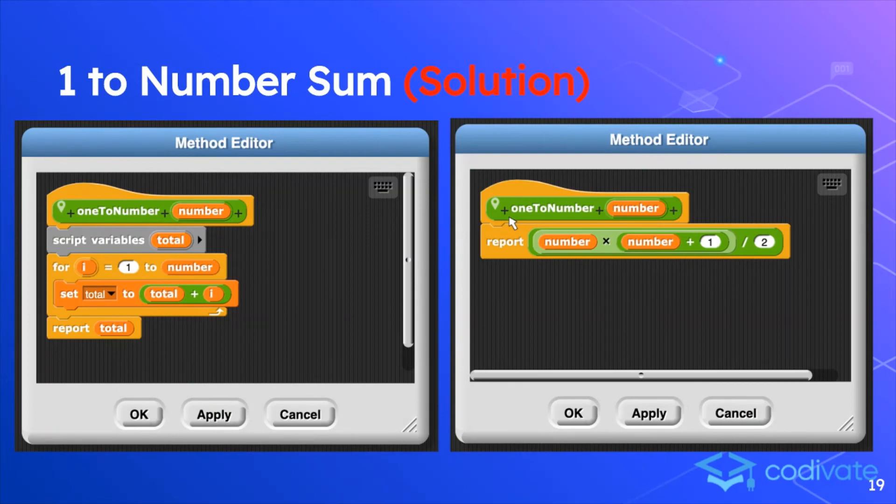This is the solution. In the first one, we can see that 1 to number plus the input of the number is the function itself. So number, in this case, is a parameter. We can create a script variable called total, and we can use a for loop that goes from 1 to the number inputted. We set total equal to total plus i, in this case, is the temporary variable inside of the for loop. If this keeps on going until the length of number, this can report the total.